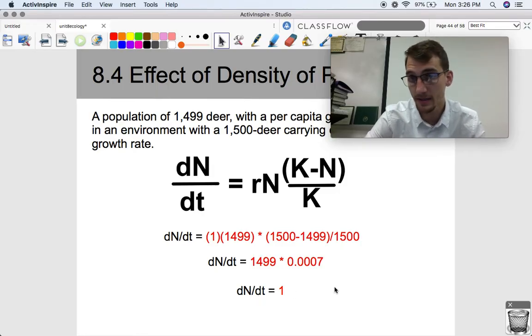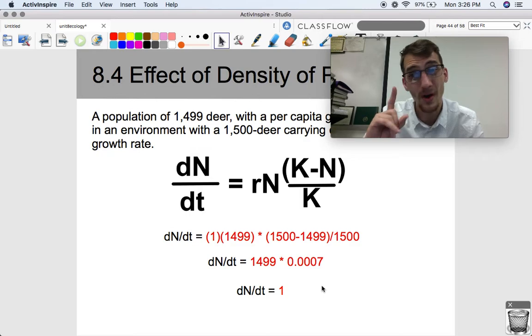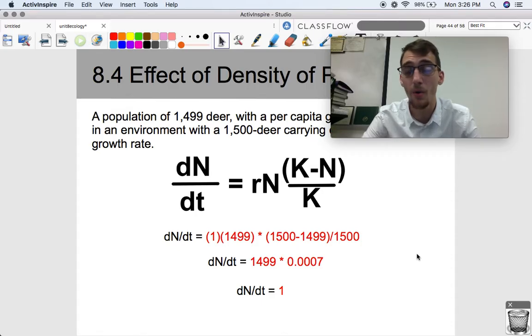That's our expected growth of this population is by 1 deer, which makes sense, right? It's only 1 below what the carrying capacity is. It's probably not going to go any higher than 1,500 as a result of the carrying capacity.